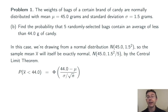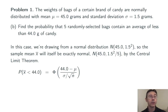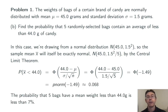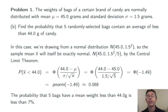Now we need to compute the probability that x-bar is less than 44. We're going to do that the same way as before by computing a z-score and using a normal CDF. We need to do phi of 44 minus mu over sigma divided by the square root of n — the standard deviation of x-bar is sigma over the square root of n, not just sigma. Plugging in values and simplifying, we get phi of negative 1.49, so p-norm of negative 1.49 is 0.068. The probability that 5 bags of candy have a mean weight less than 44 grams is less than 7%.